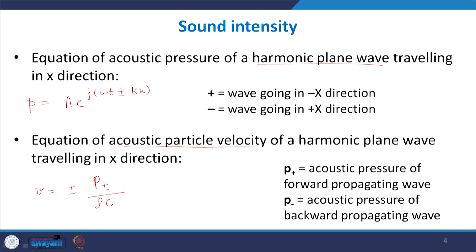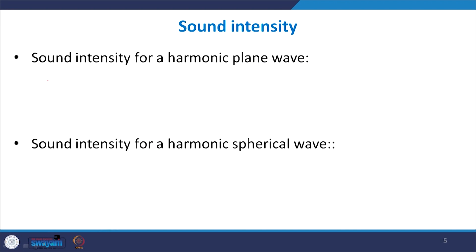The particle velocity for this harmonic plane wave is plus or minus P by ρc. If P⁺ is the forward propagating wave, then V equals P⁺/ρc, and if we have a backward propagating wave, V becomes minus P⁻/ρc. Multiplying the two quantities, the intensity becomes P²/ρc, and the average sound intensity becomes P_rms² / ρc.